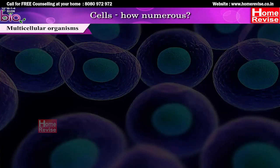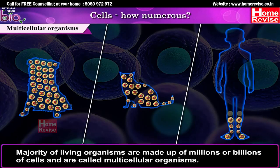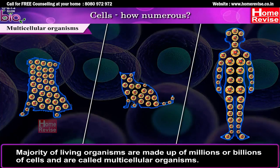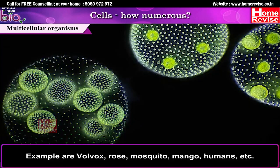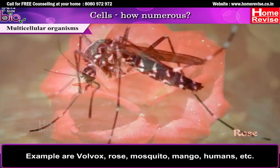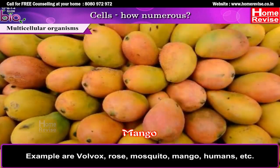Multicellular organisms: The majority of living organisms are made up of millions or billions of cells and are called multicellular organisms. Examples include bulwarks, rose, mosquito, mango, and humans.